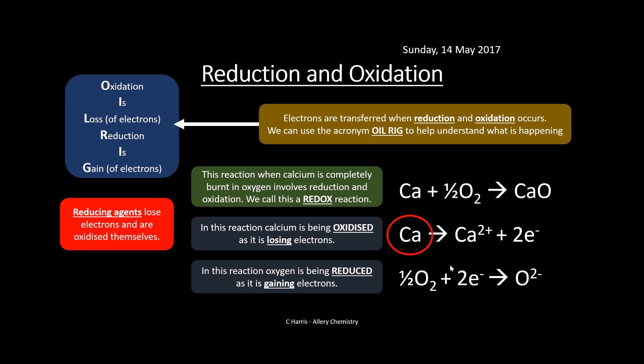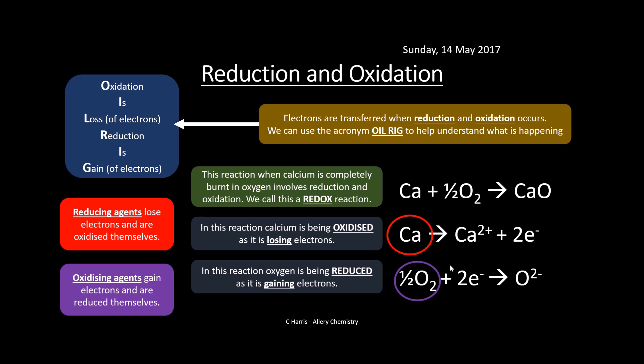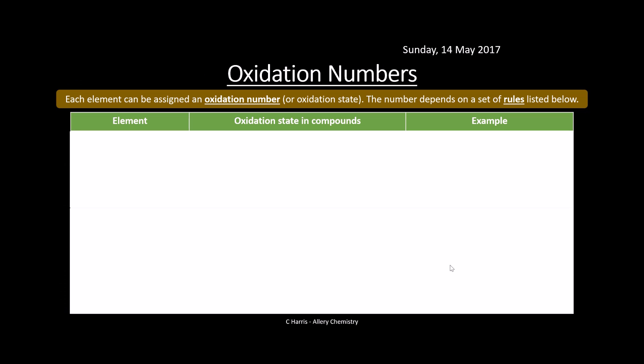Reducing agents lose electrons and are oxidised themselves - so calcium in this case is the reducing agent because it has been oxidised itself. Oxidising agents gain electrons and are reduced themselves. Make sure you know the difference between oxidising agents and reducing agents - it gets a little confusing because we've got oxidation and reduction happening alongside oxidising agents and reducing agents.